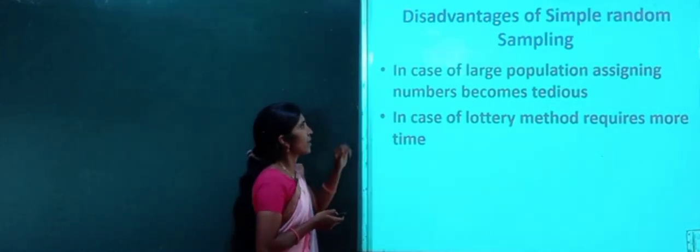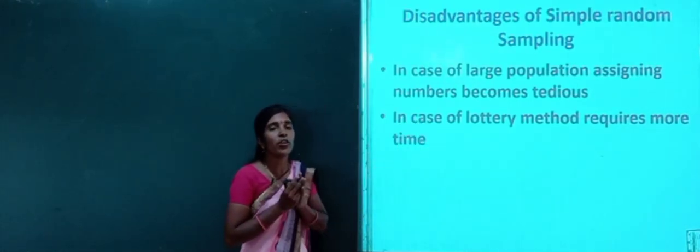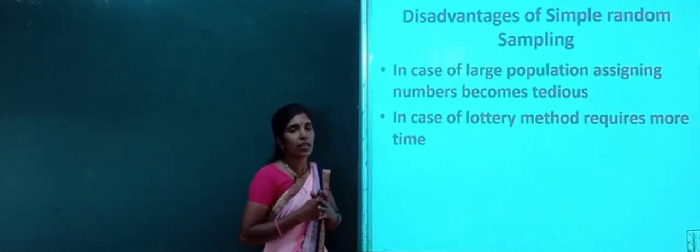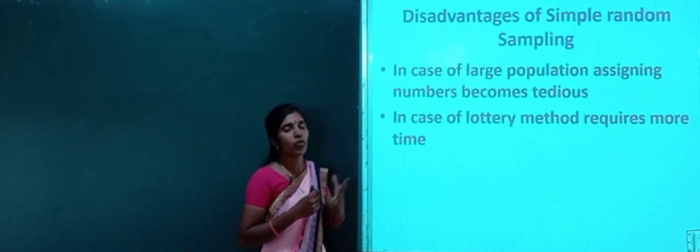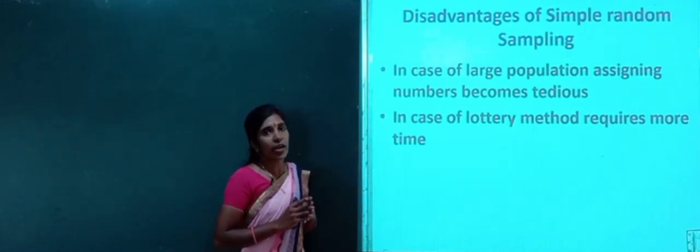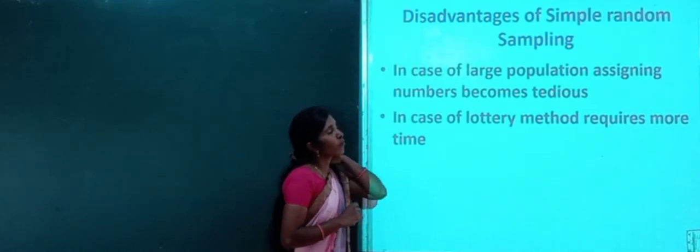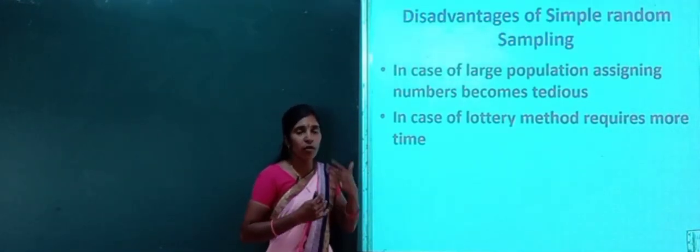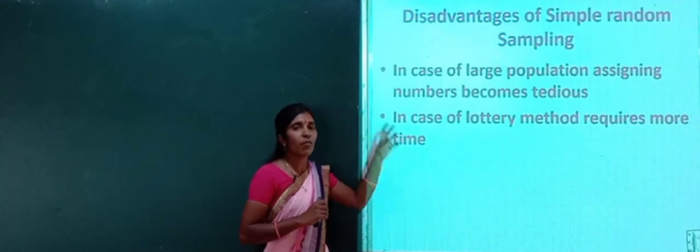There are also some disadvantages of simple random sampling. First, in the case of a large population, assigning numbers becomes tedious — when the population is very large, assigning random numbers to each unit becomes difficult. Second, the lottery method requires more time, because for a large population giving everyone an equal opportunity takes considerable time.